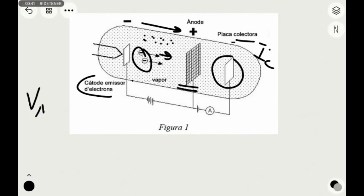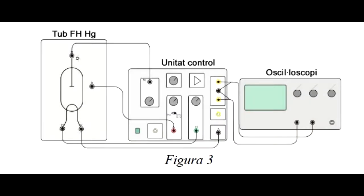If the anode's potential grows from zero, the intensity measured by the collector grows as well until the electron's energy reaches first excited state energy. After that, a drastic decay in intensity is observed due to the excitation of the atoms in the steam.